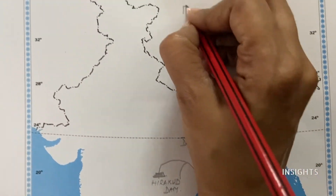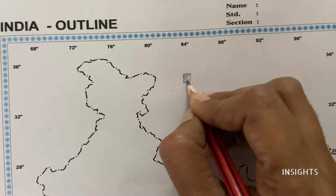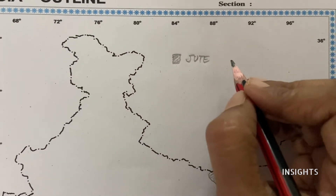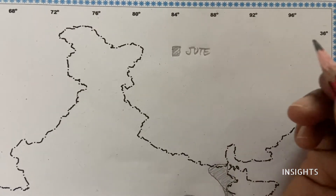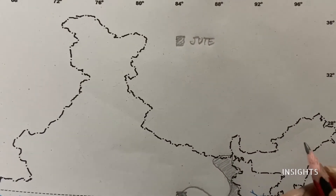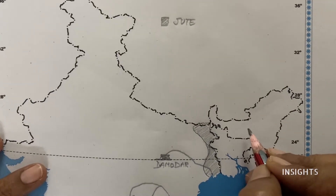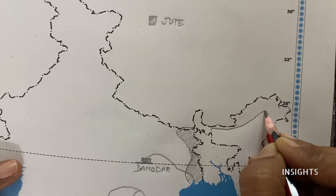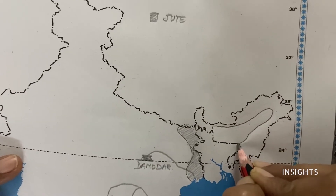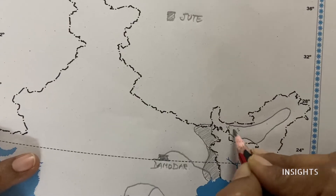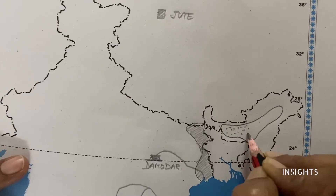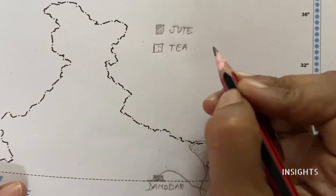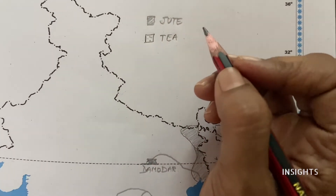Next, they have asked for tea and coffee. For tea, the major area is the northeast — that is Assam — which is one of the leading areas that produces tea. So draw this area and put dots to indicate tea cultivation. For coffee, it comes to South India.